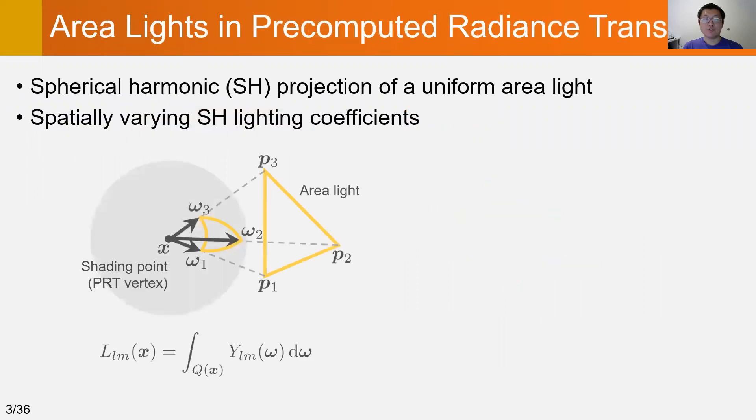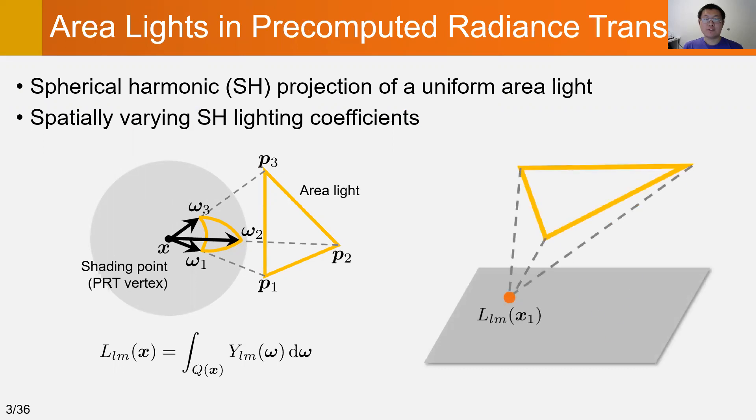To support near-field area lighting, we need to compute the spherical harmonic projection of a uniform area light at every shading point. It requires integrating SH basis functions over the area light, which leads to spatially varying SH lighting coefficients.